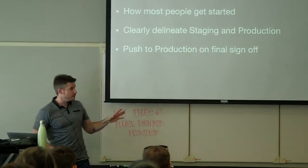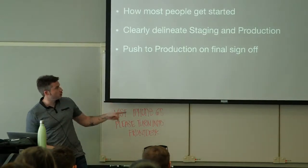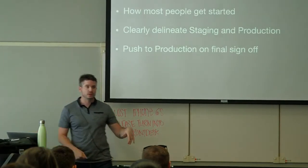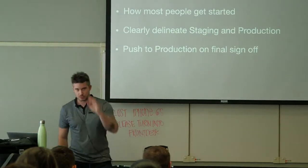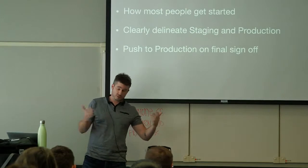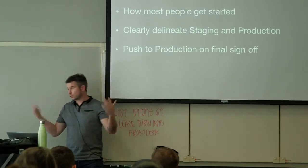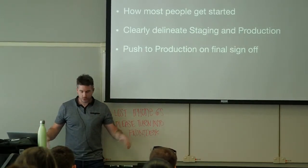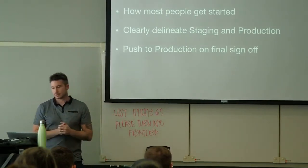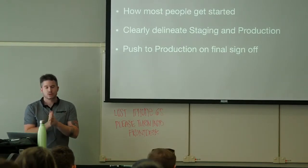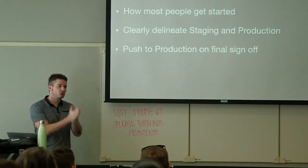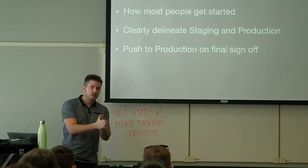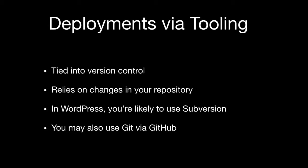You now have three environments and you're having to figure out some way to track what you've deployed via FTP. You don't know what version is on staging, you don't know what version's on production, and you can see how this can snowball out of control really fast. Maybe you select the wrong shortcut in your FTP client and your test content is now on production. If you want to grow in this area, you need additional tools — and that is where version control and deployment tools come into play.